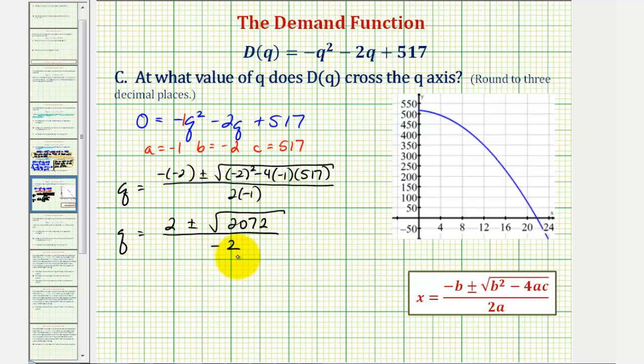Now again, we're looking for the positive value of Q, and since our denominator is negative, if the numerator is also negative, we'd have a negative divided by a negative, which would give us the positive value of Q that we're looking for. So the exact value of Q we're looking for would be Q equals two minus the square root of 2072, divided by negative two.